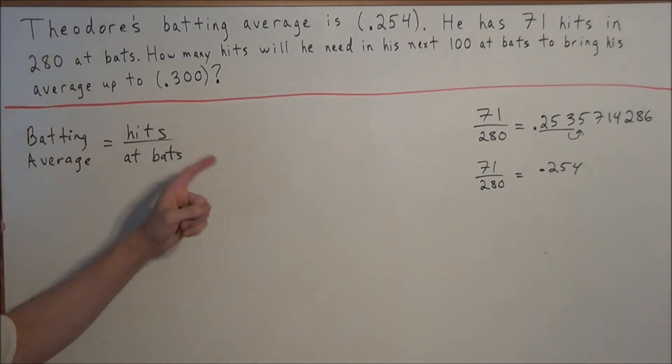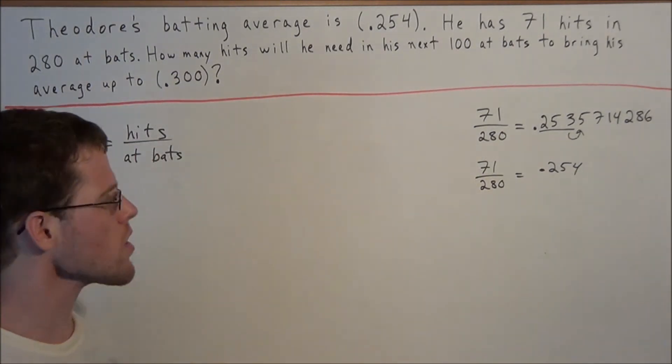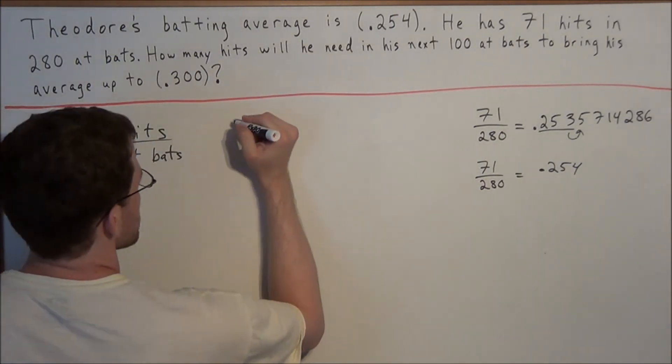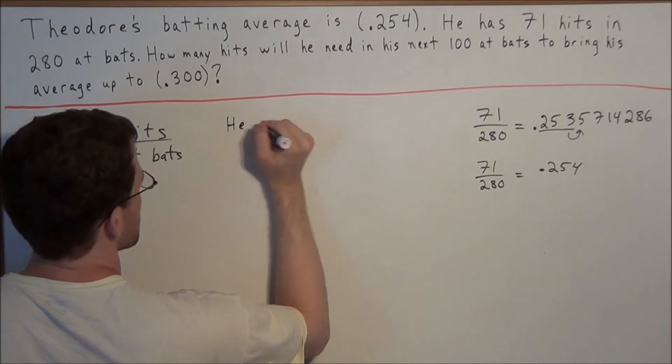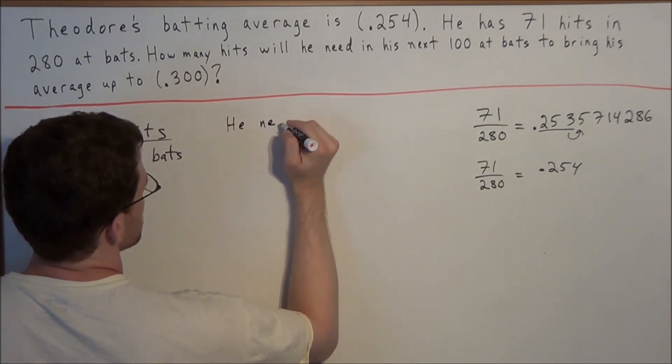So now we want to know how many hits is he going to need in his next 100 at bats to bring his average up to 300. So what we could say is, he needs, and since we don't know how many hits he needs, we'll say he needs x hits.